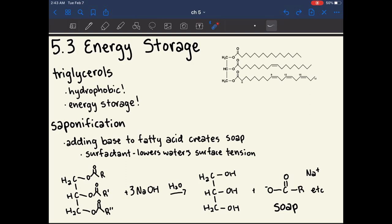Chapter 5.3 is about energy storage. So energy in the form of fat in your body is stored in triglycerides. These are hydrophobic, as many other lipids are. They're called triglycerides because here you have glycerol, and here you have three fatty acid chains.